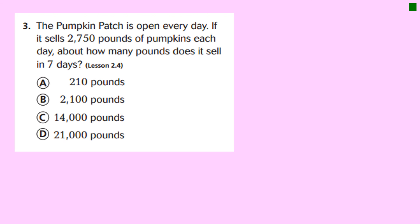Okay guys, here we are on the back in your spiral review, number three. Lesson 2.4, which is chapter two, lesson four. The pumpkin patch is open every day. If it sells 2,750 pounds of pumpkins each day, about how many pounds does it sell in seven days? Well, did you hear this word screaming out at you? About. And then I always like to glance down at the choices - look at all those zeros in the choices, boys and girls. You know we're going to be estimating.